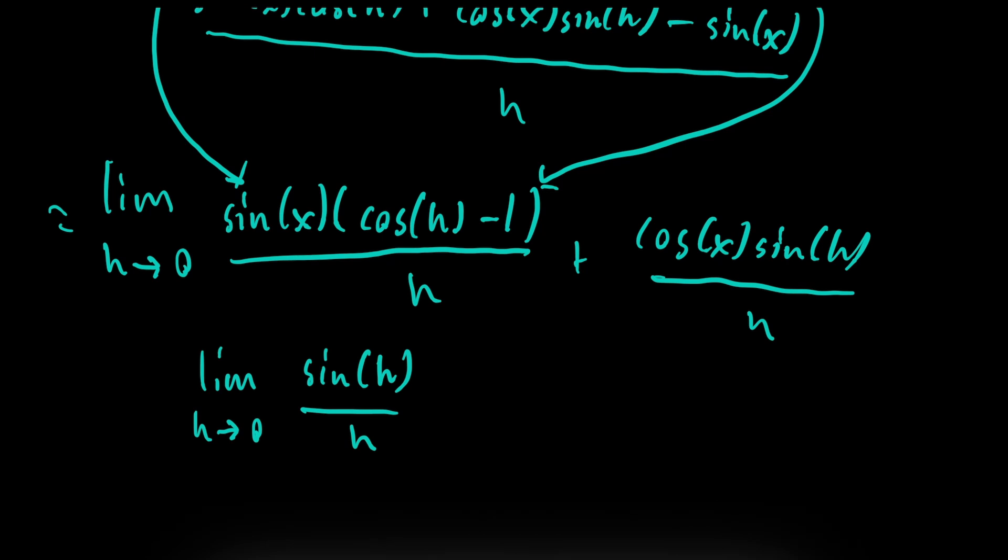The limit as h approaches 0 of sine of h over h is 1. You're just going to have to trust me on that. The limit as h approaches 0 of cosine of h minus 1 over h is going to be 0.